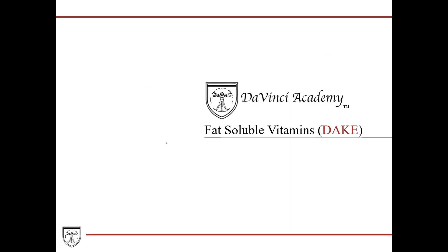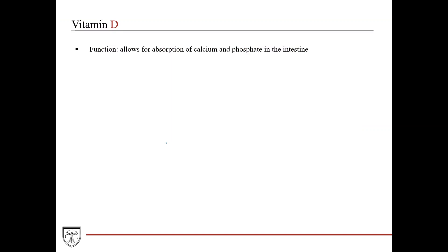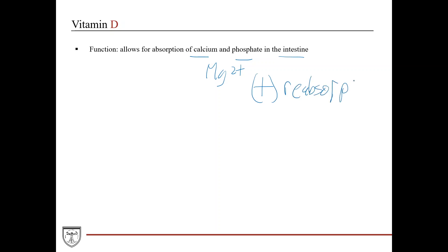Now we'll go into each fat-soluble vitamin individually. For each vitamin, we'll discuss its function, the signs and symptoms of deficiency, and in some cases, the effects of excess. The function of vitamin D is to allow absorption of calcium, phosphate, and magnesium in the intestine, and to promote reabsorption in the nephron of the kidney.